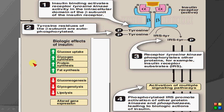In this video we are going to discuss the signaling pathway of insulin. Insulin signaling occurs by the way of tyrosine kinase, but it is not the JAK-STAT pathway — it does not involve JAK molecules or STAT molecules.